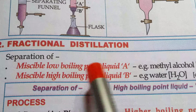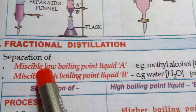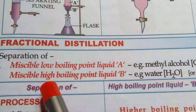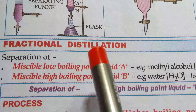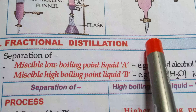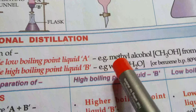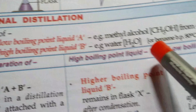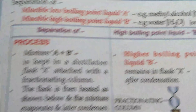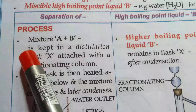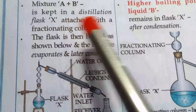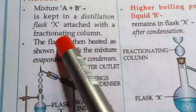The main point here is the boiling point. One liquid has a boiling point lower than the other. Both liquids must have different boiling points for fractional distillation to be applied to separate them. The example is separation of methyl alcohol from water. The molecular formula of methyl alcohol is CH₃OH. Mixture A and B is kept in a distillation flask X attached with a fractionating column.